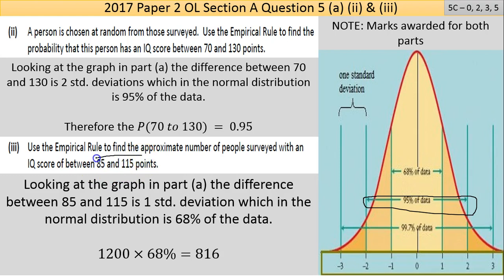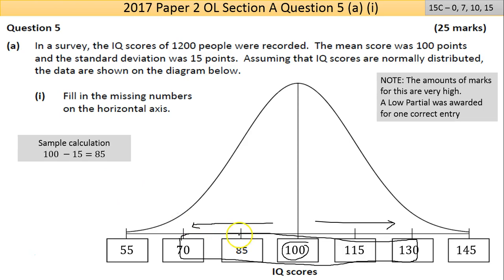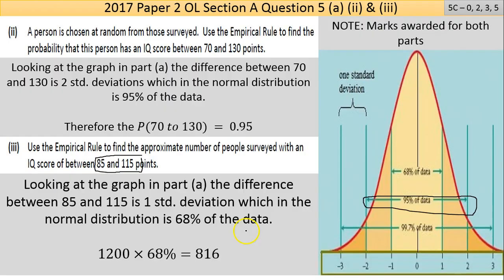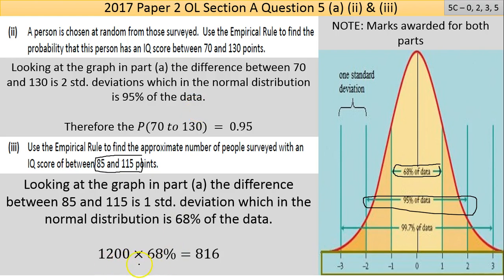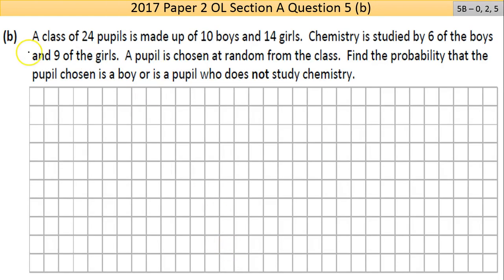Part (iii): Use the empirical rule to find the approximate number of people surveyed with an IQ score between 85 and 115. So we're now focused on 85 to 115—that's one standard deviation in this direction, one standard deviation back. The difference between 85 and 115 is one standard deviation, which in the normal distribution is 68% of data. We were given 1,200 people in the survey, so what's 68% of that? That's 1,200 times 68 over 100, which equals 816.